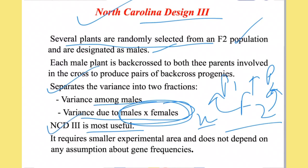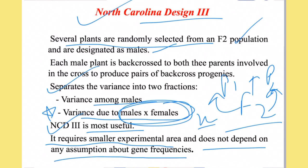NCD3 is the most useful and most powerful design compared to NCD1 and NCD2; NCD1 is the least powerful. NCD3 requires a smaller experimental area compared to NCD1, while NCD2 requires a much larger experimental area. NCD3 does not depend on any assumptions based on gene frequency, while NCD1 and NCD2 depend on certain genetical assumptions. NCD1 and NCD2 are influenced by the presence of maternal effects, while NCD3 is free from that assumption.